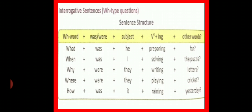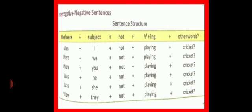Next is wh type questions, which start with words like what, when, why, where, how. The sentence structure will be wh word plus was or were plus subject plus verb's first form plus ing plus other words. Like what was he preparing for, when was I solving the puzzle and so on.